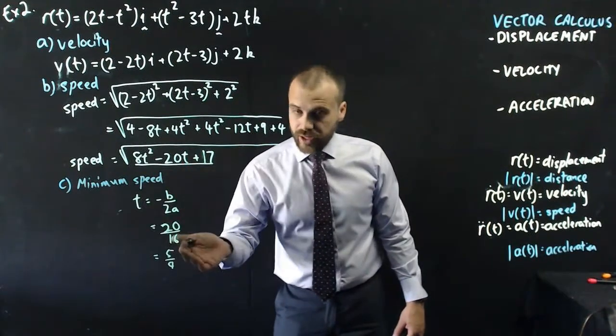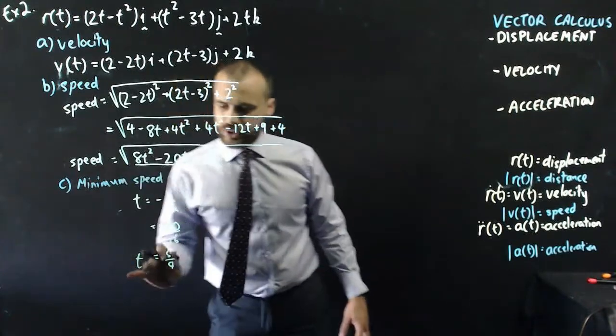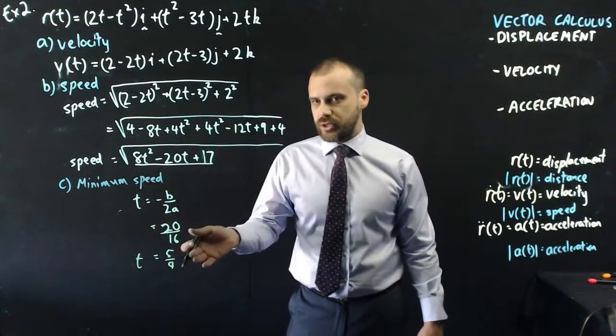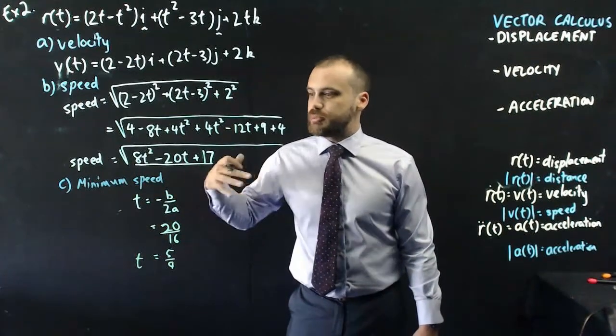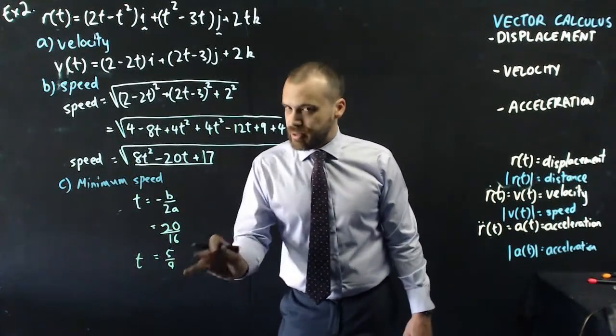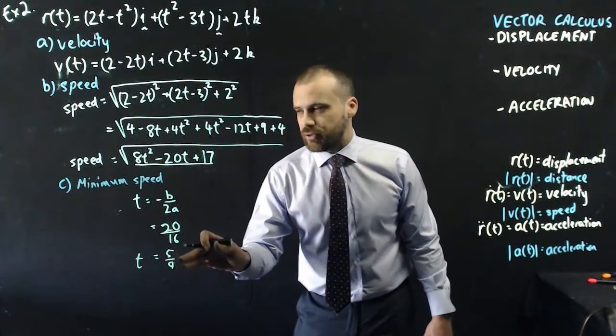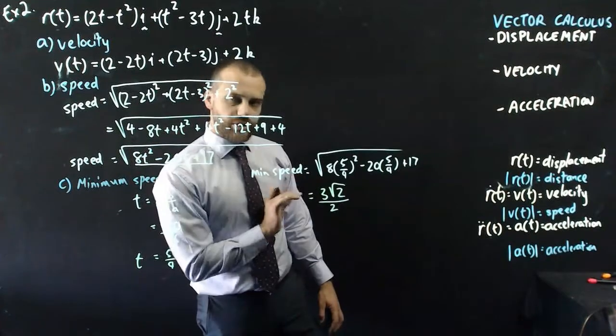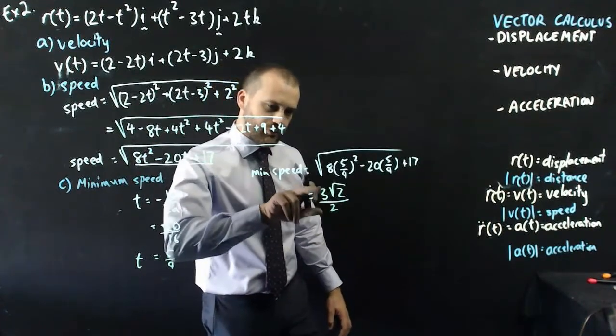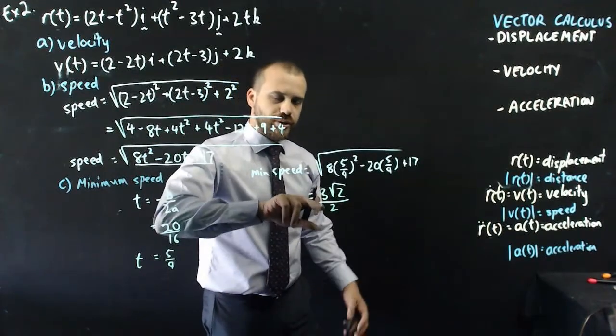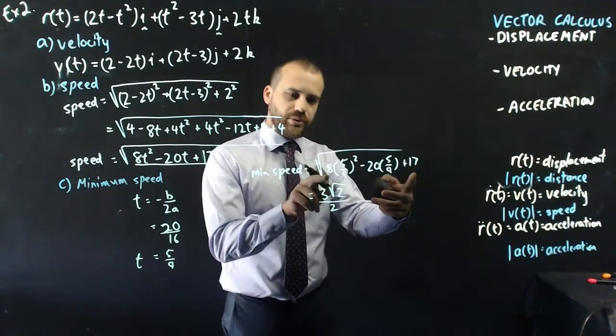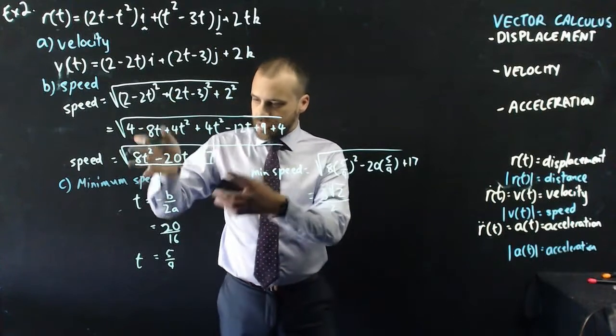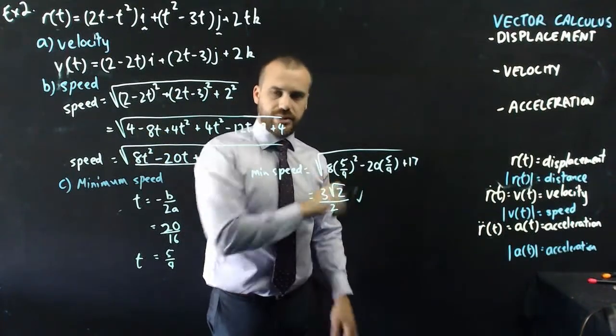Now, when I do that, I get a t value of 5 on 4, and it's important to note that that is the t value, the time at which the minimum speed occurs, not what the minimum speed is. To find out what the minimum speed is, I put my time of 5 on 4 back into this whole equation. Now, when I do that, I land on an answer of 3 root 2 on 2. Now, obviously, you end up with a much larger number in there, and then you simplify, and that's what you get. All right, there's our minimum speed here. Done.